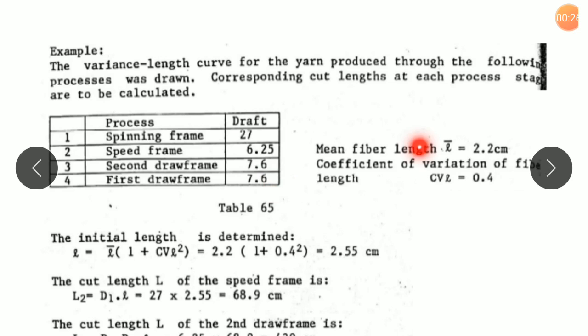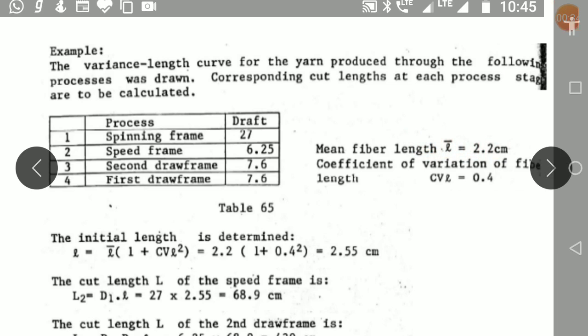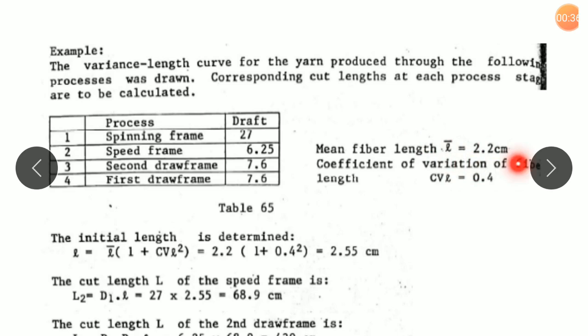Further, the mean length of the fiber taken is 2.2 cm or 22 mm. The coefficient of variation of fiber length is 40%, which means 0.4. If there is a variation of fiber length of 40%, it will be written as 0.4.